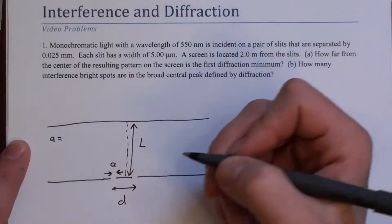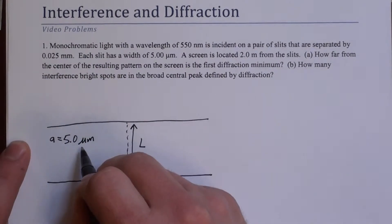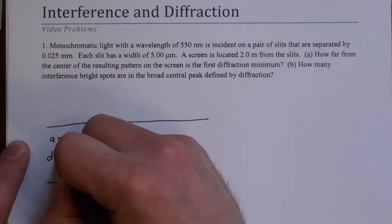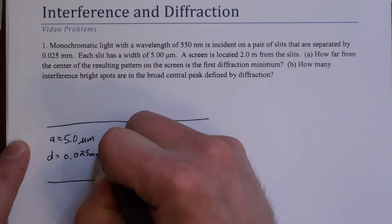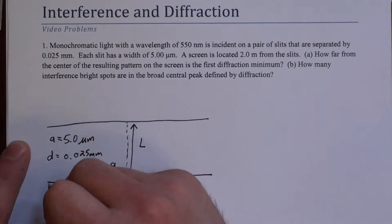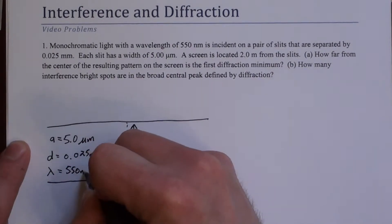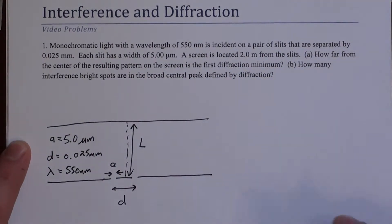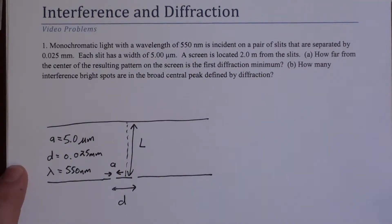A was 5.0 micrometers, that's 10 to the minus 6. D was 0.025 millimeters, 10 to the minus 3. Lambda was 550 nanometers, which is 10 to the minus 9. We're going to need to remember all of those because we need to do math in SI units eventually.